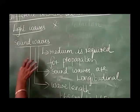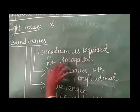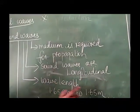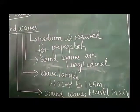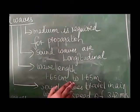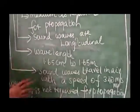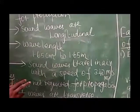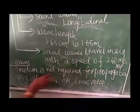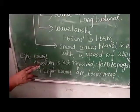Sound waves: medium is required for propagation. Sound waves are longitudinal. Wavelength: 1.65 cm to 1.65 meter. Sound waves travel in air with the speed of 340 meters per second at NTP.